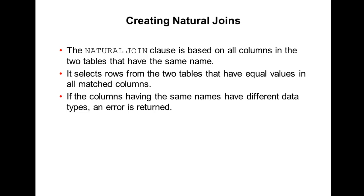A natural join is based on all columns in two tables that have the same name. For example, if the employees table has a department ID column and the departments table also has a department ID column, you can use natural join because both share the same column name. It selects rows from two tables that have equal values in all matched columns.